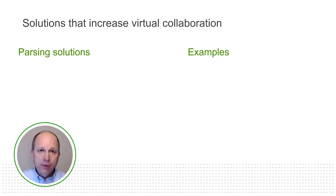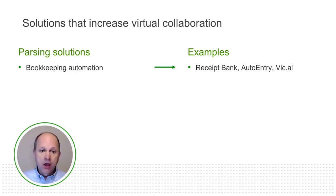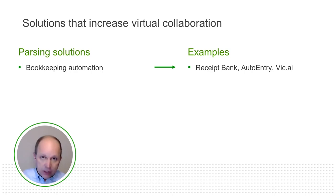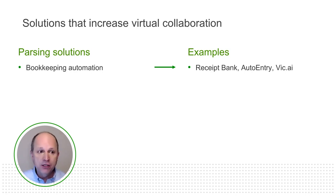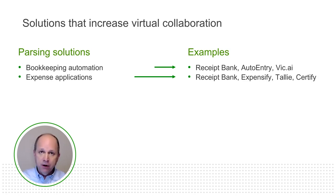Solutions that increase virtual collaboration also include parsing solutions — those that extract and interpret information off the page. Bookkeeping automation is an example: Receipt Bank, AutoEntry, and VIC-AI. QuickBooks Online's receipt capture is also an example of bookkeeping automation through data parsing. Expense applications extract information off receipts — Receipt Bank, Expensify, Tally, and Certify. Payables automation extracts information off vendor bills sent as email attachments or scanned in — that's Bill.com, Tipalti, or Mineraltree. All of the solutions on the right talk to QuickBooks Online.